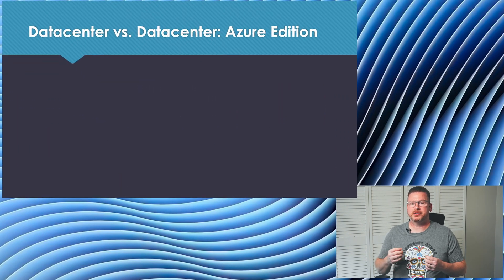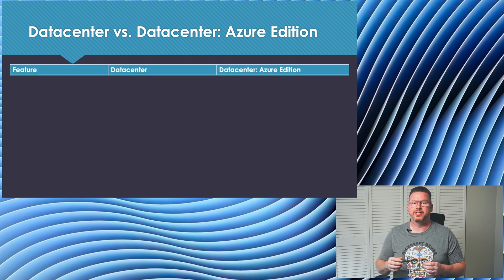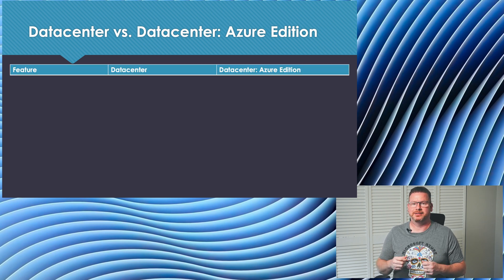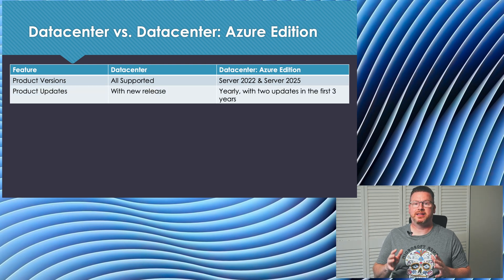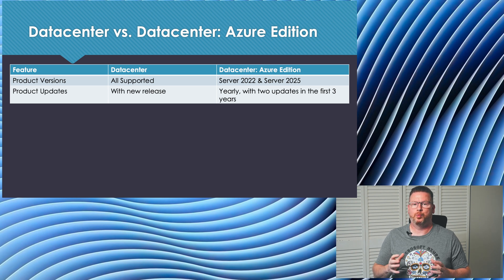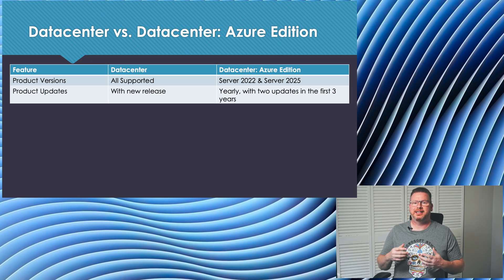Next, let's move on to Windows Server Datacenter compared to Windows Server Datacenter Azure Edition — or let's just call it Azure Edition. Datacenter is available with all supported versions of Windows Server. Azure Edition is only available on Server 2022 and 2025. Datacenter is updated with each major release. Azure Edition gets updates every year delivered with Windows updates. Azure Edition is a version of Windows Server Datacenter focused on innovations and virtualization optimization in Azure.